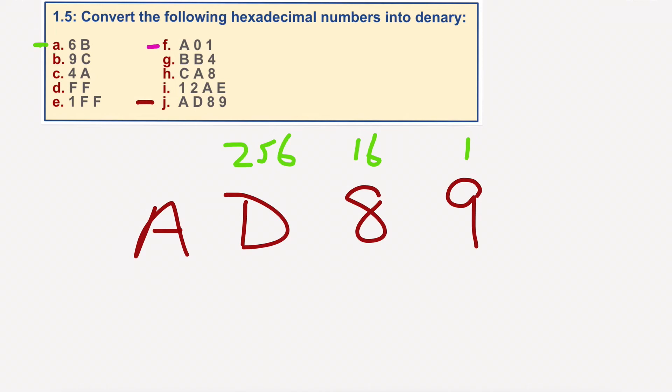16 times 256 would equal, if I remember rightly, 4,096. So let's have a little look at this. We have 10 times 4,096. So that would be 40,960.